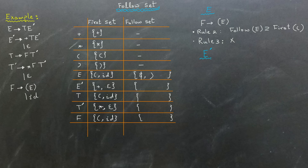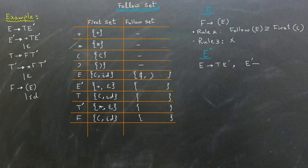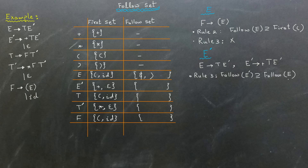Next, let's apply the rules to determine the follow set of E-bar. I have identified two productions where E-bar appears, and in both cases E-bar is at the end of the production. This means we have to apply rule 3. First, consider the production where E produces the sequence T E-bar. According to this rule, the follow set of E-bar must contain the follow set of E. Therefore, we update the follow set of E-bar by adding the dollar sign and the closing parenthesis from the follow set of E.